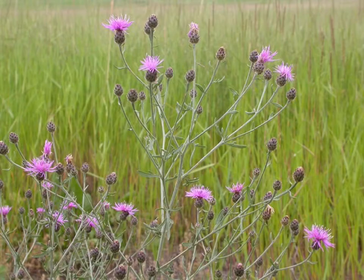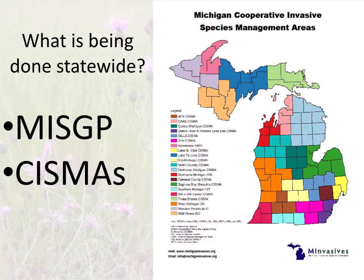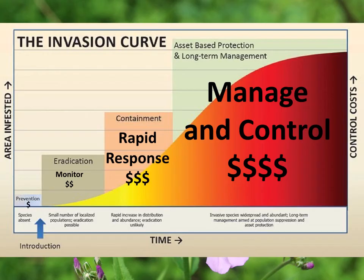Now we're back to quick snapshots. Every county in the state is covered by a CISMA. How each operates is slightly different, but all have a goal of preventing invasive species spread. If you are outside the Barrie, Calhoun, Kalamazoo area, there is somebody for you — you can still contact me and I will get you in contact with the right person.